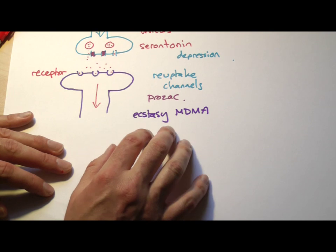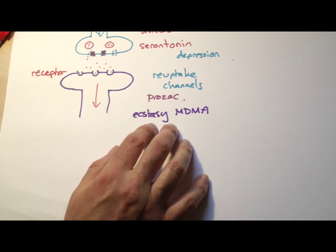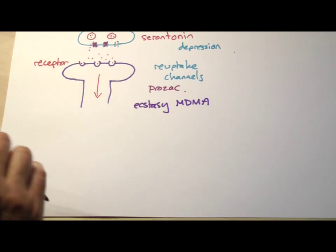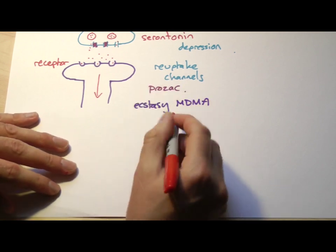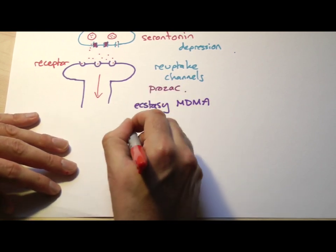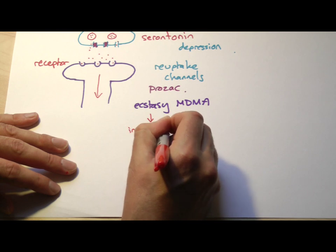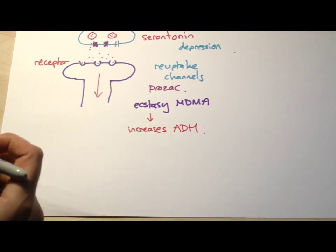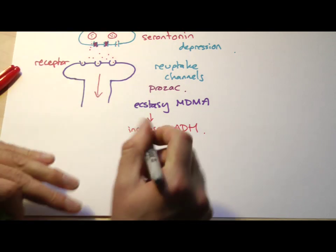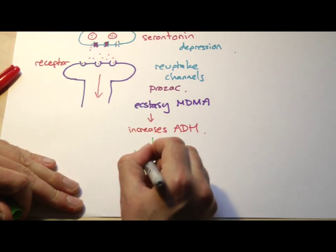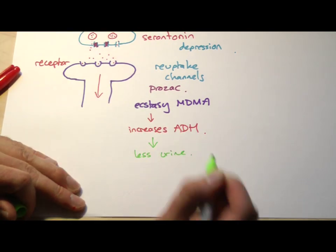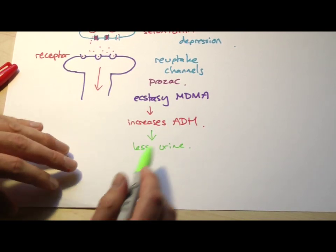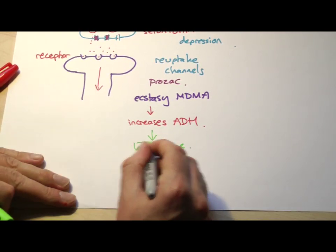Now, one of the problems with the book is that it actually says in the book that ecstasy slows down the production of ADH. Now, actually, it doesn't. What it does is it increases ADH production. And ADH is the hormone produced from your pituitary gland, which stops you from peeing. So, on the effects of ecstasy, you would produce less urine. I'm not quite sure why it says that in the book, but that's the real answer.